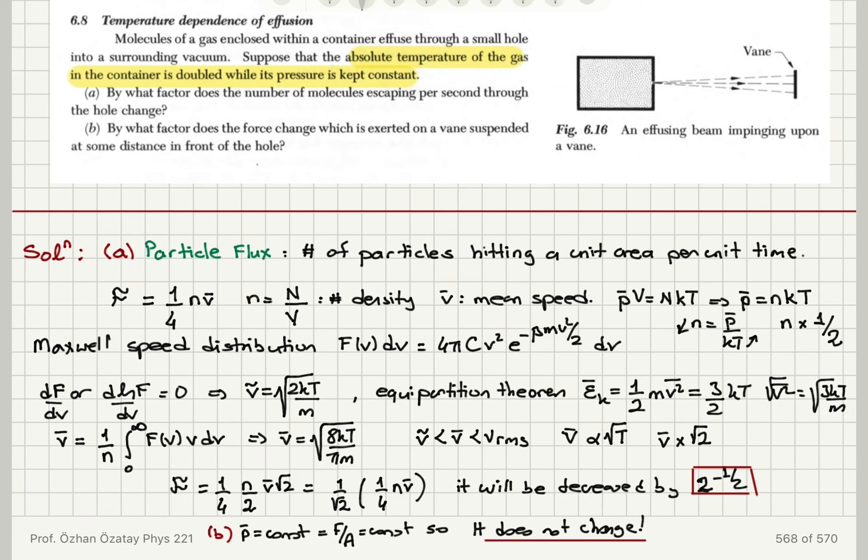For part B, since the pressure is kept constant, the pressure at the hole is constant, and therefore the pressure at any distance from the hole will also be constant. So the force on the vane does not change.